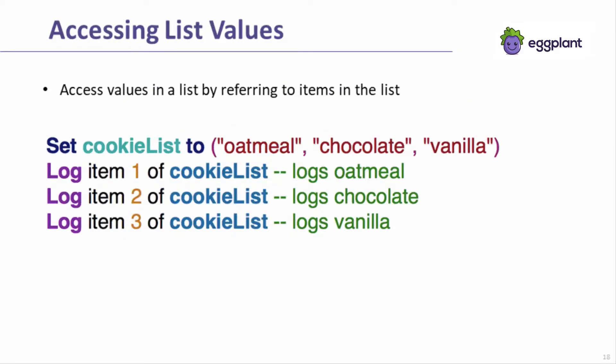Particular items within a list can be accessed by their position within that list. The item can be accessed by its item number, as in these examples, or by using the ordinal. For example, log the first item of cookie list. Sensetalk also supports expressions such as the last or the penultimate, or notation such as minus one for referencing the last item in a list.